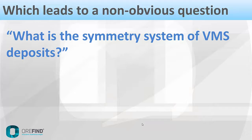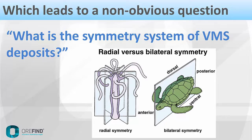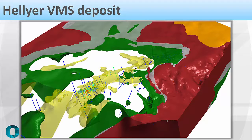Which leads to a non-obvious question: what is the symmetry system of VMS deposits? Is it radial symmetry or bilateral symmetry? The reason this is a non-obvious question is because the VMS conceptual models clearly indicate that VMS deposits have a radial symmetry. But in reality, what do VMS deposits actually look like? I'm going to take a look at the Hellier deposit, because I have modeled this and I can actually show you what it looks like in reality.